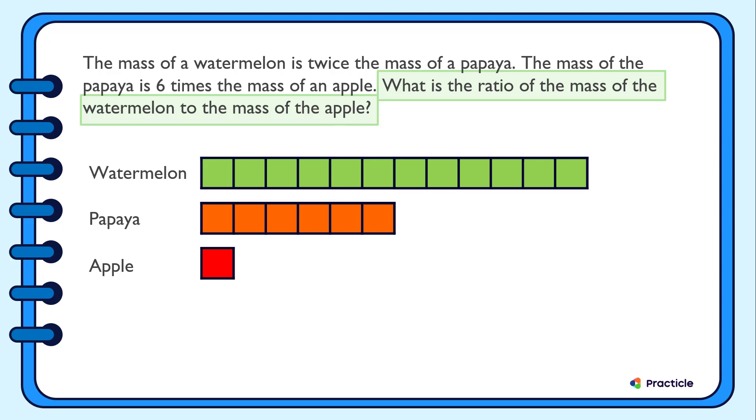And how many of these parts represent the mass of an apple? Yes, we have one part. So the ratio of the mass of the watermelon to the mass of the apple is 12 is to 1. And that's our answer to this primary 5 ratio problem sum.